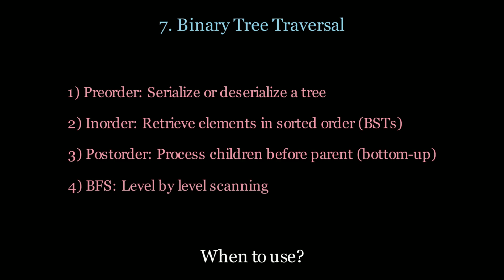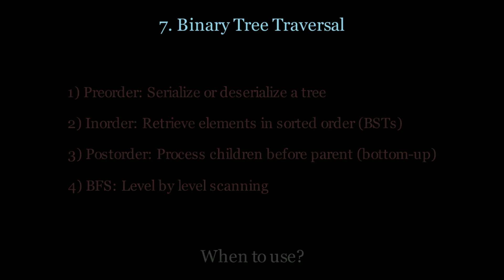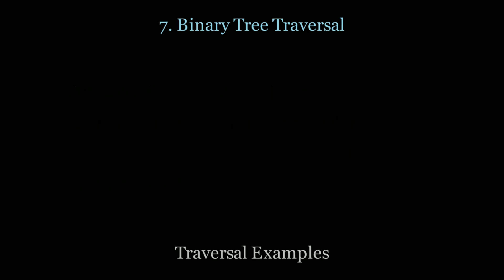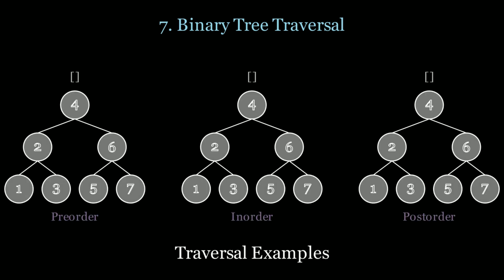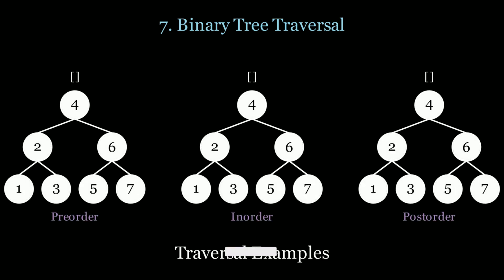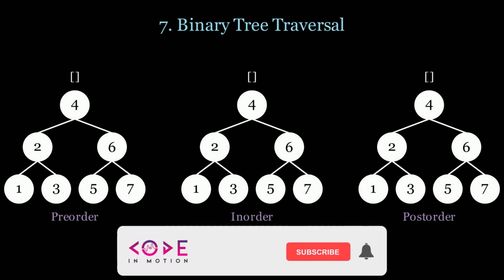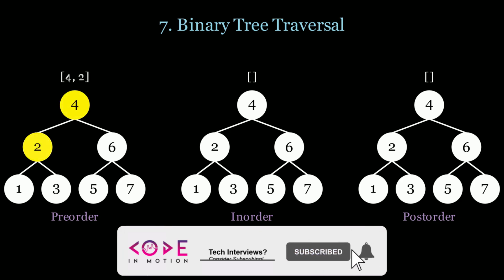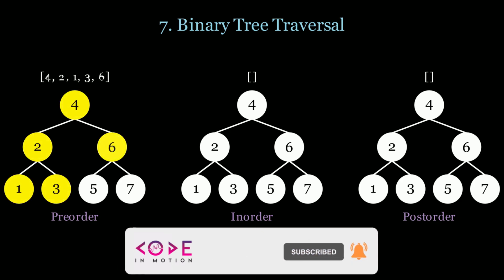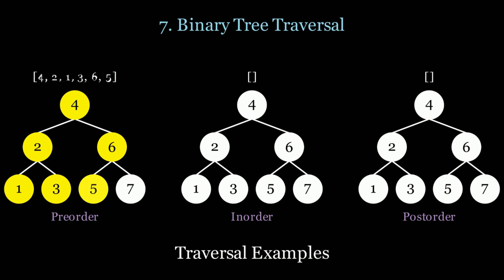Let's see how this looks in practice, starting with pre-order traversal. We scan the nodes before the children, so we scan 4 first, then 2, then 1, then 3, then 6, then 5, then 7.